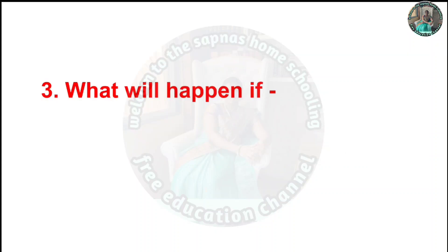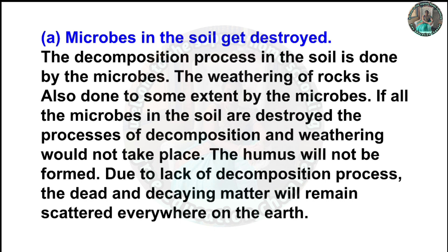Question 3: What will happen if microbes in the soil get destroyed? The decomposition process in the soil is done by microbes. The weathering of rocks is also done to some extent by microbes. If all the microbes in the soil are destroyed, the processes of decomposition and weathering would not take place. Humus will not be formed. Due to lack of decomposition, the dead and decaying matter will remain scattered everywhere on the earth.